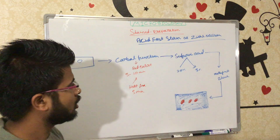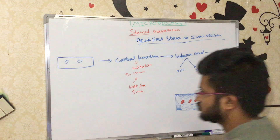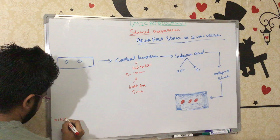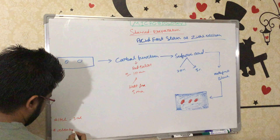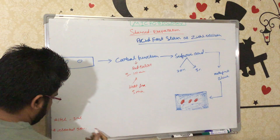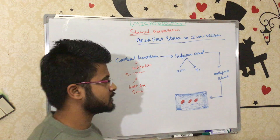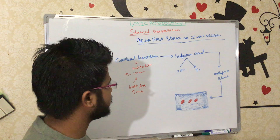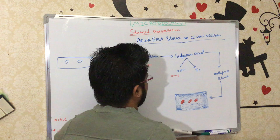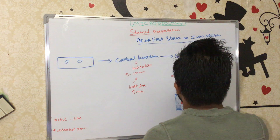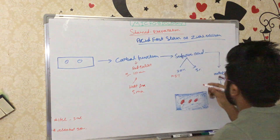After the carbol fuchsin step, we add sulfuric acid as the decolorizer. Instead of sulfuric acid, we can also use HCl — approximately 3% — or 90% ethyl alcohol. However, sulfuric acid is the most widely used decolorizer: 20% sulfuric acid is used for Mycobacterium tuberculosis (MTB).